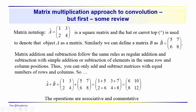A quick review of the notation. If we have a matrix A, we could indicate that this variable is a matrix by putting a hat on it, or sometimes you'll see it as a bold capital letter. We have an array of values in rows and columns: one, three, two, four. This is a square matrix — the caret or capital letter just denotes that this quantity is a matrix.